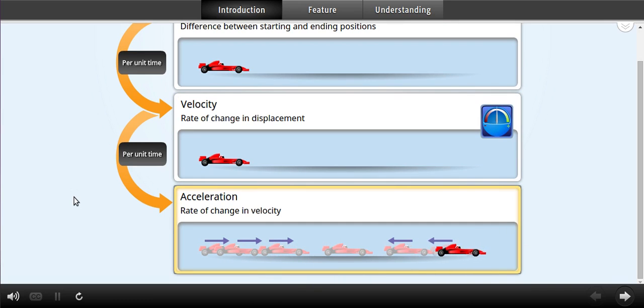Acceleration is the rate of change in velocity or change in velocity per unit of time. Examples include speeding up and slowing down. Click the feature tab to explore how acceleration affects displacement and velocity in one dimension.